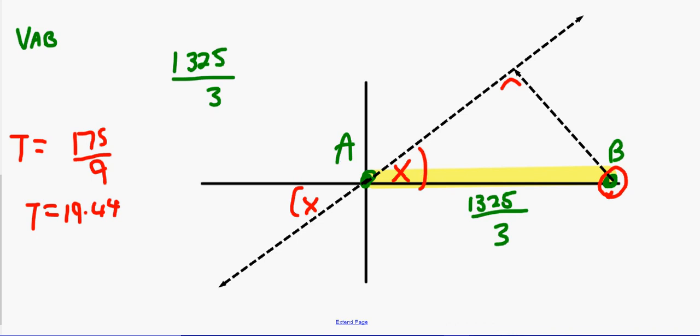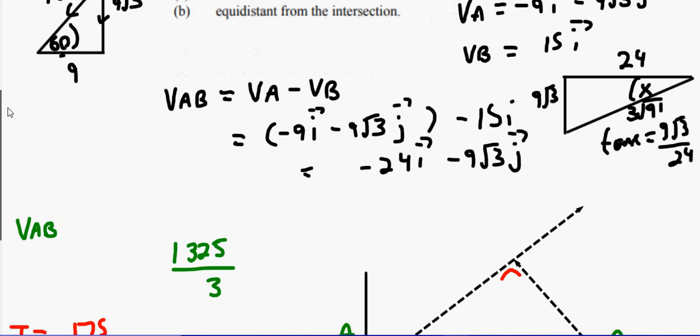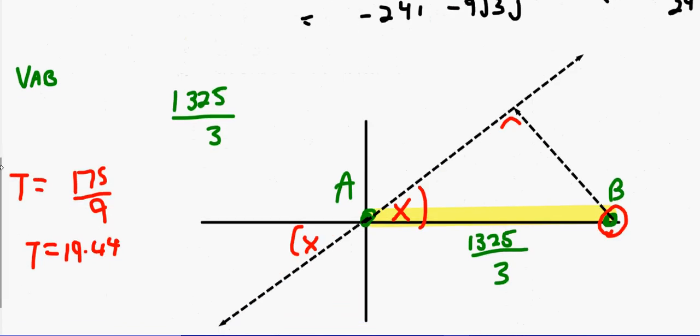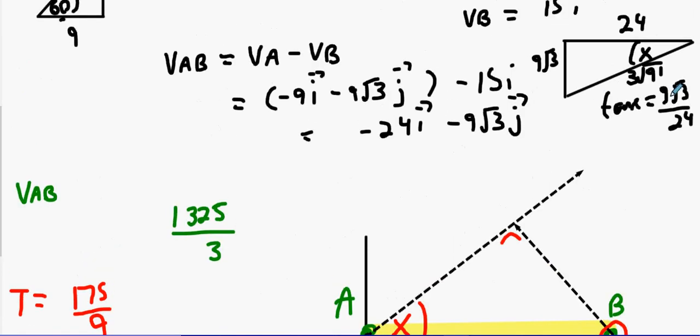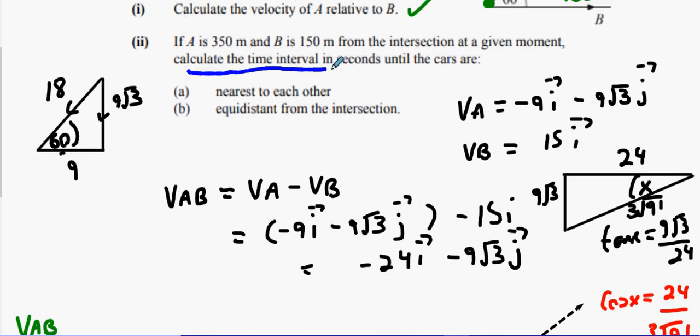What does it want from us? When are they nearest to each other? Because it's the relative... the red circle around B, we're talking about the relative velocity here. And the relative velocity is tan X equals 9 root 3 over 24. Cos X if you want it is 24 over 3 root 91. Sine X is 9 root 3 over 3 root 91. They're just math numbers really. Here's the question: Does it actually want me to calculate the closest distance? Reread the question. It doesn't want me to do that. Don't need to do it.